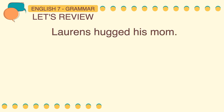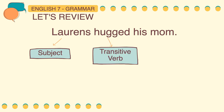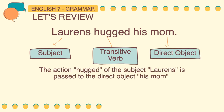Last example: Lawrence hugged his mom. In this sentence, the doer of the action is Lawrence. The action he did is hugged, and the receiver of the action is his mom. The action hugged of the subject Lawrence is passed to the direct object, his mom.